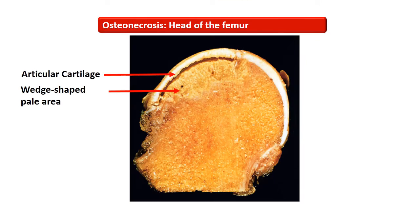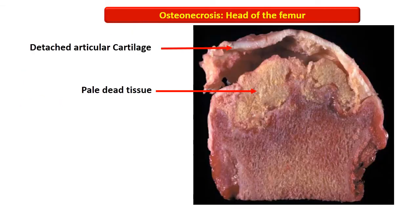This is the cut section of the head of the femur, showing that the articular cartilage is intact. Underlying the articular cartilage, the area is wedge-shaped, geographical, and pale in appearance, with slight detachment of the dead area from the overlying cartilage. This photograph shows the cut section of the femoral head with detached articular cartilage, and the underlying area shows irregular, geographical, pale dead tissue.